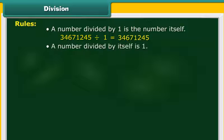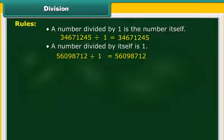A number divided by itself is 1. 56098712 divided by itself is equal to 1.